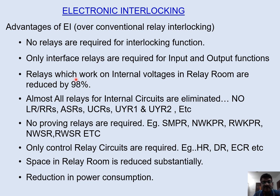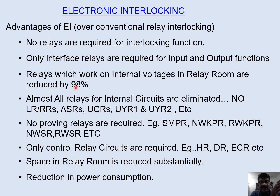Relays working on internal voltages in the relay room are reduced by almost 98 percent. Previously, internal 24 volts were used to pick up many relays — ASRs, UCRs, and similar relays — which are all eliminated because of EI. Hence power consumption has reduced. Almost all relays for internal circuits are eliminated, for example ASRs, UCRs, UIR, etc.